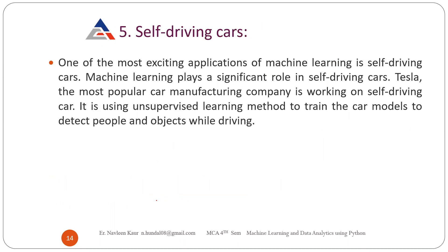Then there are self-driving cars — one of the most exciting applications of machine learning. Tesla, the most popular car manufacturing company, is working on self-driving cars. The car is learning from its experiences; the more it works on the street and the more data being fed to it about roads and traffic, the more capable it becomes of driving on its own. It is using unsupervised learning, meaning everything is not fixed — traffic can suddenly appear. It uses unsupervised learning to train car models to detect people and objects while driving.